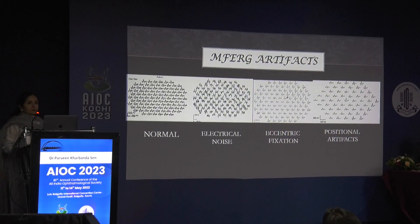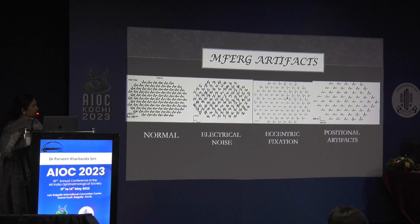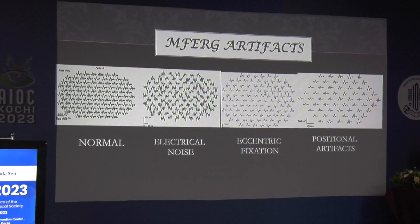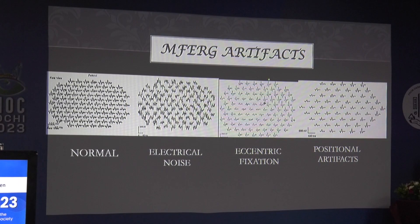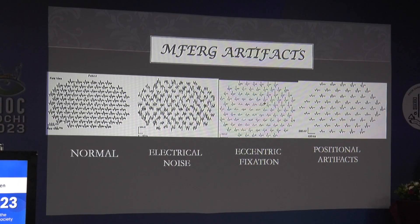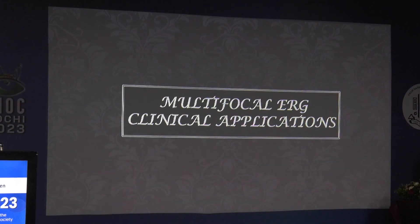Multifocal ERG has many artifacts. Keep a normal MFERG pattern in mind. Three repetitive waveforms with high amplitudes may represent 60 Hz electrical noise rather than a true waveform. Eccentric fixation shifts responses away from the expected central peak. Positional artifacts arise from non-alignment of glasses, patient, and machine. Always verify recording quality before interpretation.